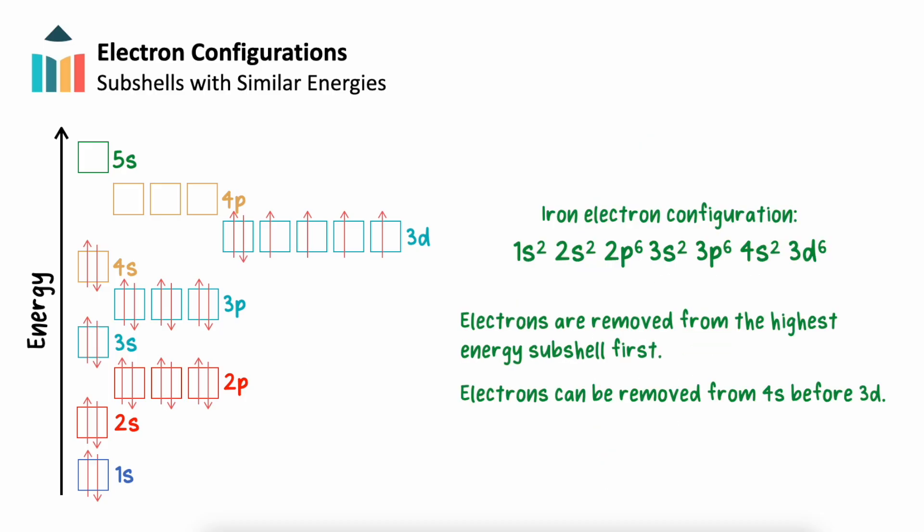When electrons are removed from an atom, they're taken from the highest energy subshell first. In a 3d metal such as iron, when the 4s and 3d subshells are occupied with electrons, the order of their energies switch. When iron forms the iron 3 plus ion for example, electrons are removed from 4s and then 3d. This would change iron's electron configuration to end in 3s2, 3p6, 3d5, with the 4s orbital now empty.